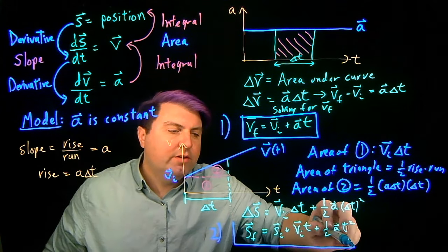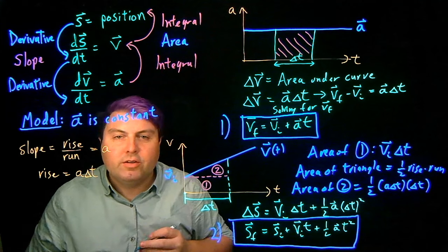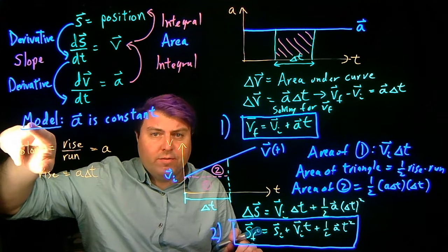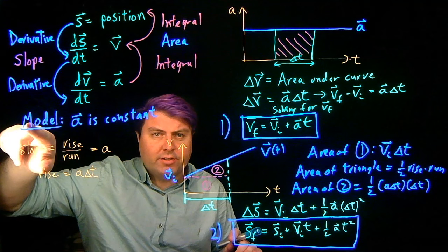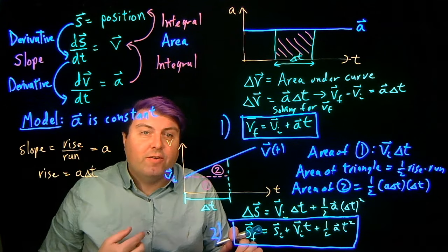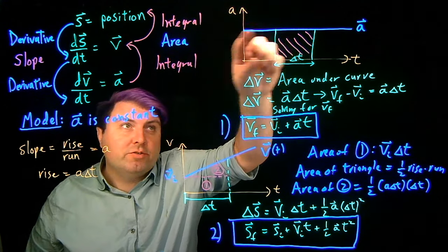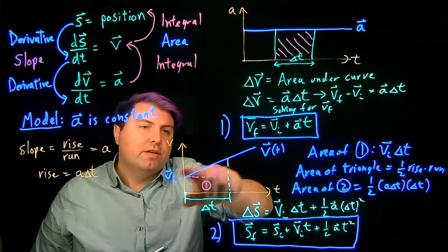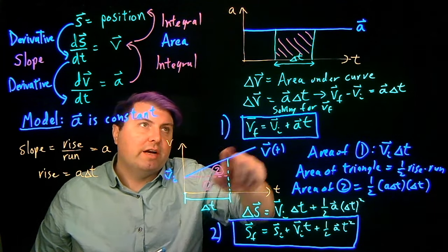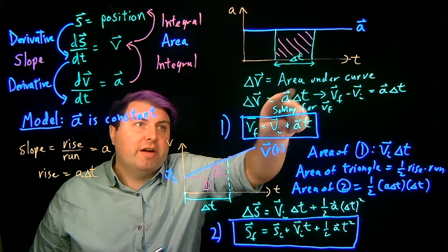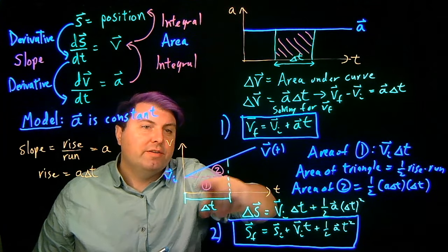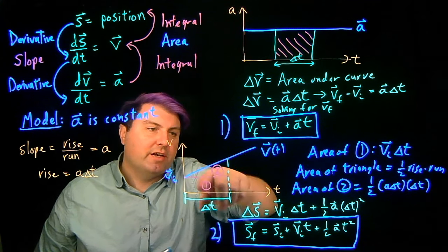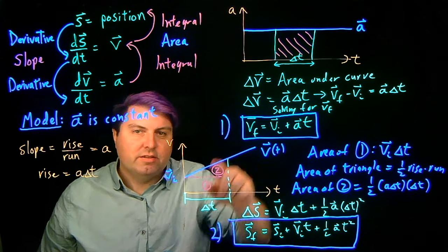With these two equations we can do all of kinematics, but we have to remember where we came from: the model that acceleration is constant. If acceleration is not constant, we can't draw these specific graphs, the areas become different, and we cannot use these two equations.